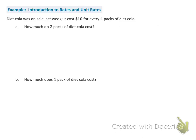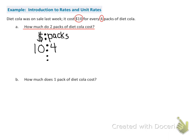Here is example number one. Diet Cola was on sale last week. It cost $10 for every 4 packs of Diet Cola. What we know is that it costs $10 for every 4 packs, and we need to determine how much do 2 packs of Diet Cola cost. So let's start with what we know — we have the cost and the packs. We know that it costs $10 for every 4 packs, and we also know that we have 2 packs, and we're trying to figure out the unknown.